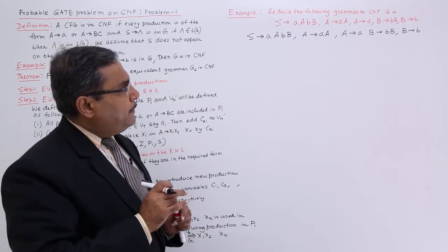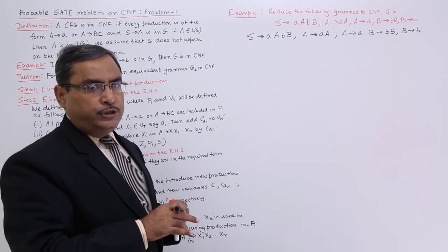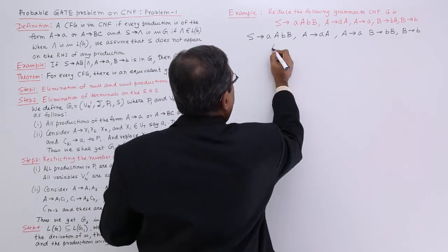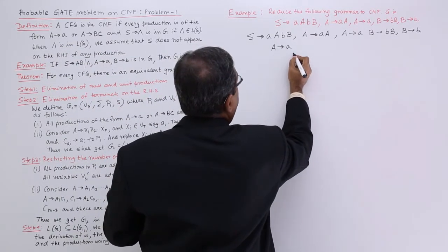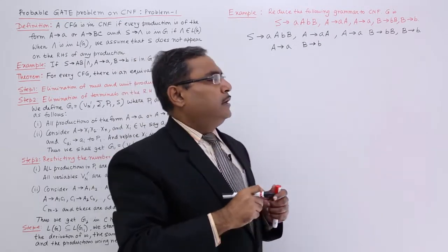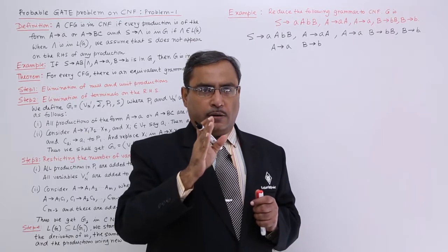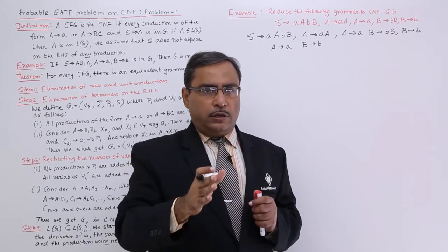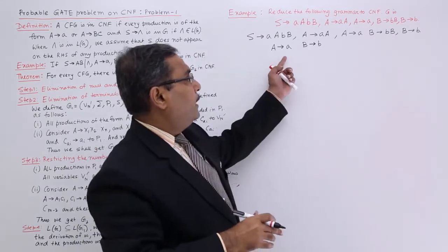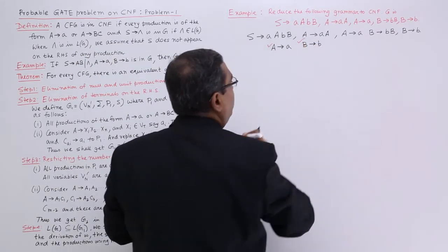Step 2: Are you finding any production in this given G which is in accordance with CNF? Yes, we are finding. What are they? They are a produces small a and b produces small b. We know that in Chomsky normal form, all productions will be either non-terminal produces terminal, or non-terminal produces non-terminal non-terminal. So they will be in the final grammar.